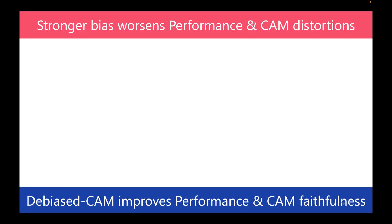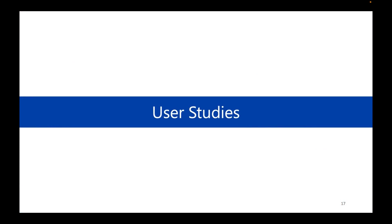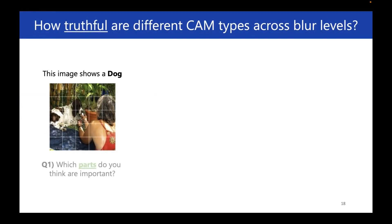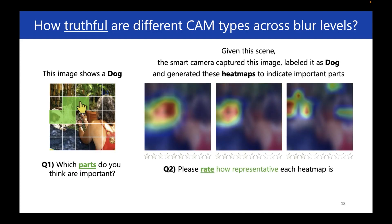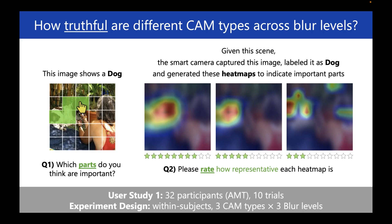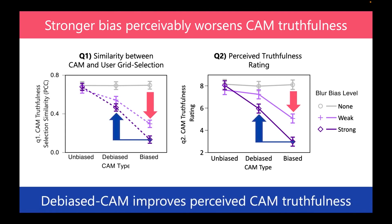Our approach achieves more faithful explanations across different prediction tasks and bias types. Next, we explored how sensitive people are to biased CAMs, and whether biased CAMs are good enough, through user studies with an image label verification task. We objectively measured saliency map truthfulness with a grid selection question, considering a saliency map truthful if highlighted areas were consistent with human grid selection opinions. We then showed participants blurred images with different machine-generated saliency maps and asked for subjective ratings, in a study with 32 participants recruited from Amazon Mechanical Turk. We found that although saliency map truthfulness degraded with increasing bias level, Debiased CAM could always improve truthfulness.